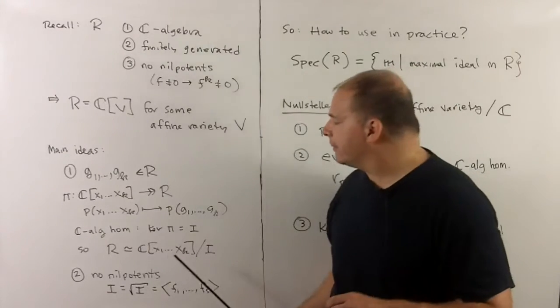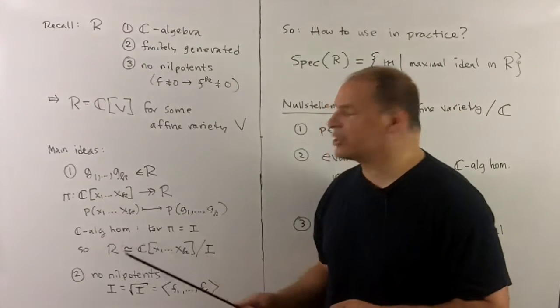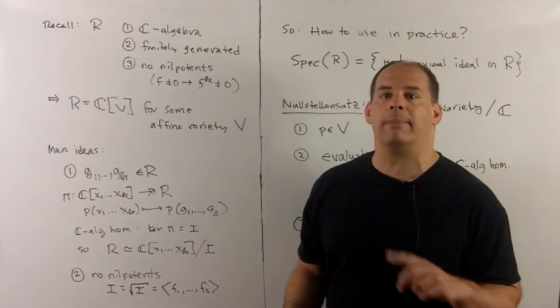This is going to be a surjective map and a C-algebra homomorphism. Now because it's surjective, if the kernel is equal to I, then we have that our ring is just isomorphic to the polynomial ring modded out by I.